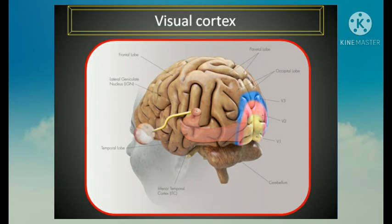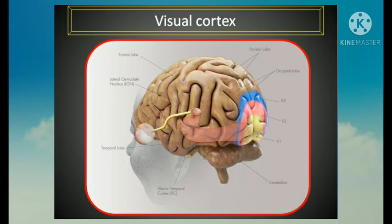The secondary visual area surrounds the primary visual area and occupies most of the remaining visual cortex on the medial and supralateral surface of the cerebral hemisphere. This area receives efferent fibers from the primary visual area and relates the visual information received to past visual experiences, enabling the individual to recognize and appreciate what they are seeing. In other words, the secondary visual area is responsible for recognition of objects seen.